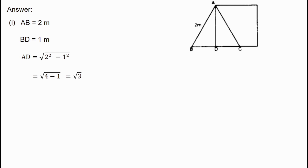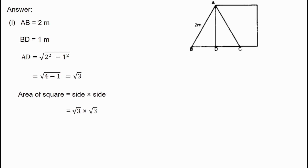AD is the length of the square's side. AD equals √3. So AD equals √3.